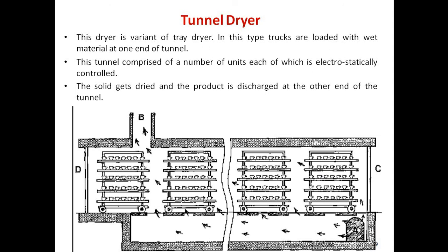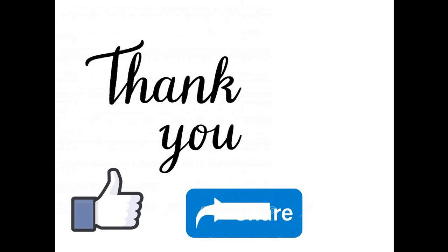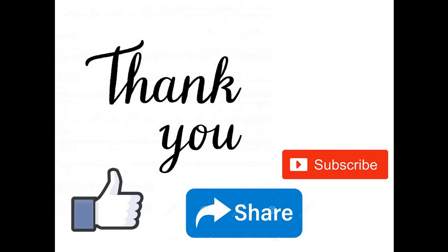The tunnel is comprised of a number of units whose movement is electrostatically controlled. The solid gets dried and the product is discharged at the other end. The wet mass passes through the tunnel, gets heated, and circulating air removes the moisture from the wetted substrate, so the feed gets dried up. The movement of each truck through the tunnel is electrostatically controlled.